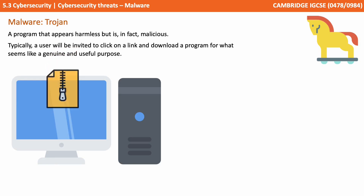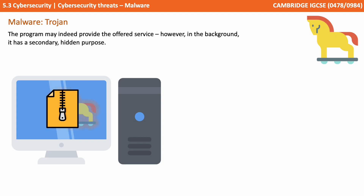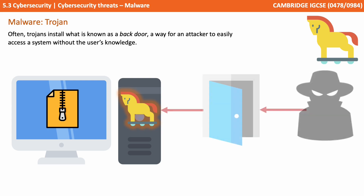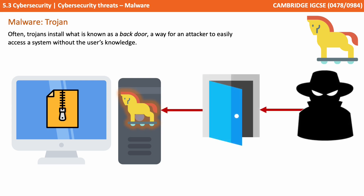A Trojan is a program that appears harmless but is in fact malicious. Typically a user is invited to click on a link and download a program for what seems like a genuine and useful purpose. A program may actually indeed provide the offered service, however in the background it has a second hidden agenda. Often it installs what's known as a back door — a way for an attacker to now easily access your system without your knowledge.